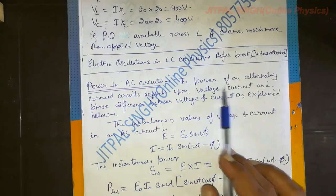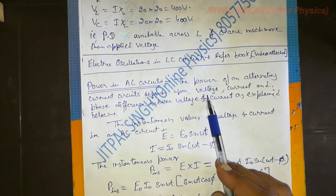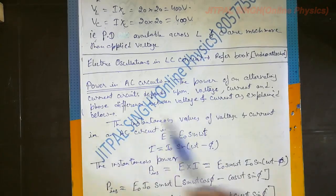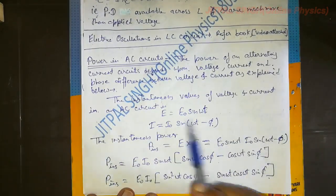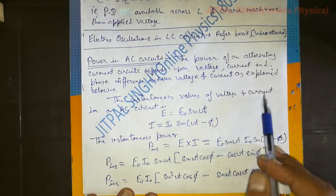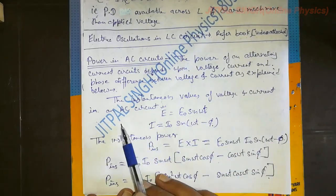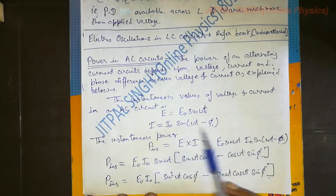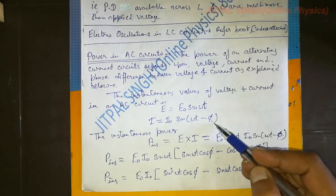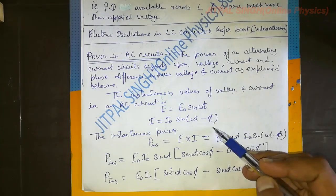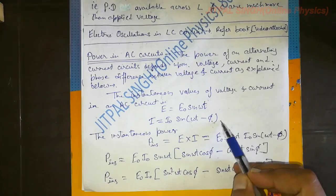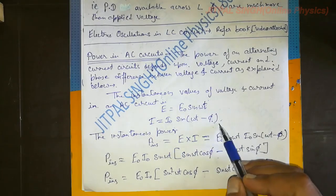The power of an alternating current circuit depends upon voltage, current, and phase difference between voltage and current. Let us take instantaneous values of EMF and current as E = E₀ sin(ωt) and I = I₀ sin(ωt − φ). This φ suggests that there is a phase difference φ between EMF and current. EMF leads current by phase angle φ, or we can say current lags behind E by phase angle φ.